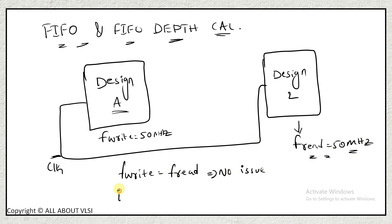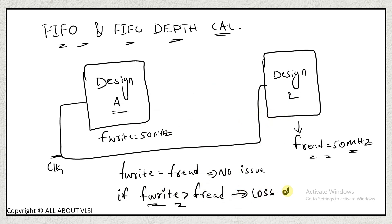If the writing speed is greater than the reading speed — for example, Design A writes at 100 MHz and Design 2 reads at only 50 MHz — there will be loss of data. Similarly, if write frequency is 1.5 MHz and read rate is 40 MHz, there will definitely be loss of data. To avoid this data loss, we use a module known as FIFO.